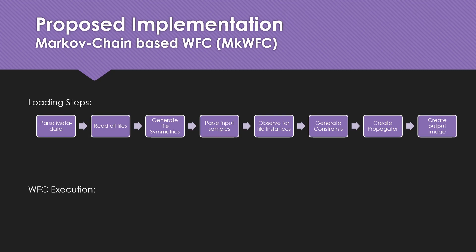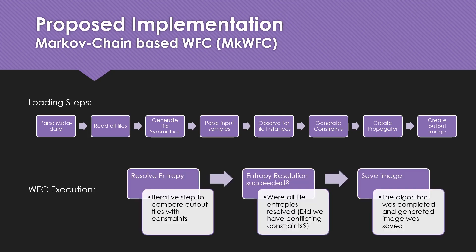The Markov chain implementation parses metadata, reads tiles, and generates tile symmetries like tiling wave function collapse. But upon doing so, it also reads input samples, observes tile instances, and generates constraints very similarly to overlapping wave function collapse. Upon doing so, it creates a propagator and generates the output image. The execution of wave function collapse has remained the same — it resolves entropy and writes the image to a file if entropy resolution succeeded.